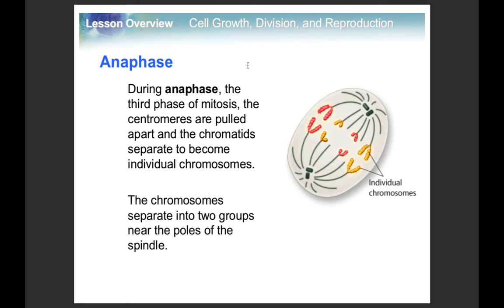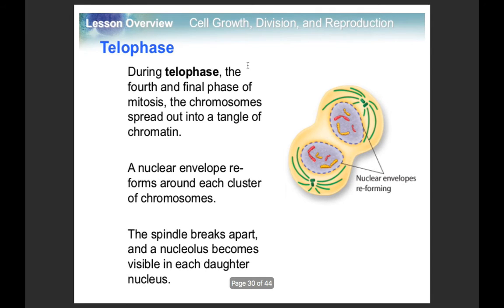Then you go through anaphase — think A for away, same as with arteries. The chromosome is essentially ripped in half and the chromatids are pulled to different poles. After that comes telophase, where the nuclear envelopes are already forming and the cell is getting prepared for division.